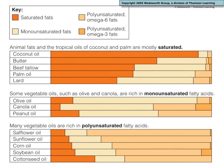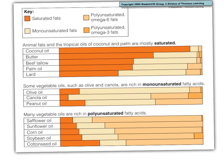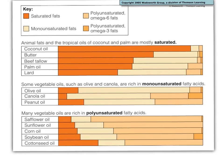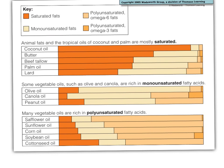This chart of various oils and their fat composition is for your information — the specific breakdown of each oil won't be on the test. However, you should know that animal fat is saturated, and tropical oils are also saturated. Lard actually has less saturated fat than coconut oil or butter. Olive oil has very little saturated fat and is mostly monounsaturated. Canola oil has the least saturated fat of common oils and is high in omega-3 polyunsaturated fatty acids.